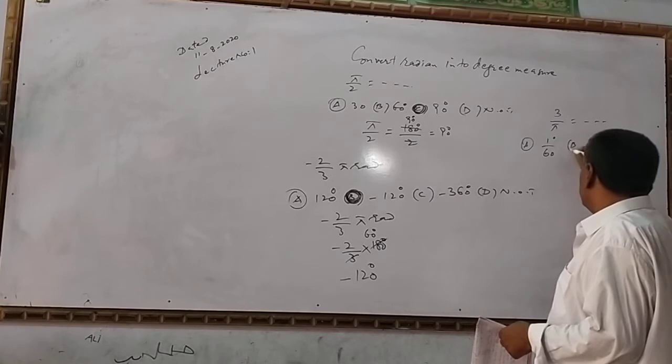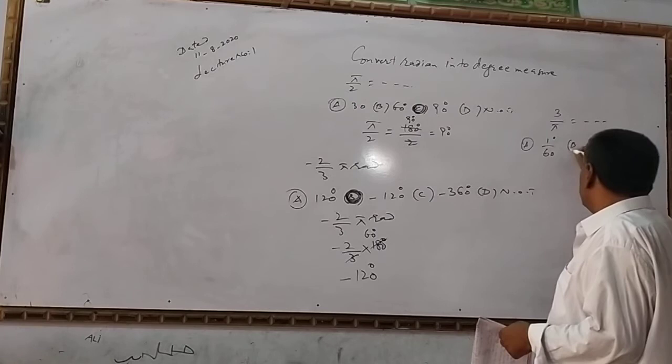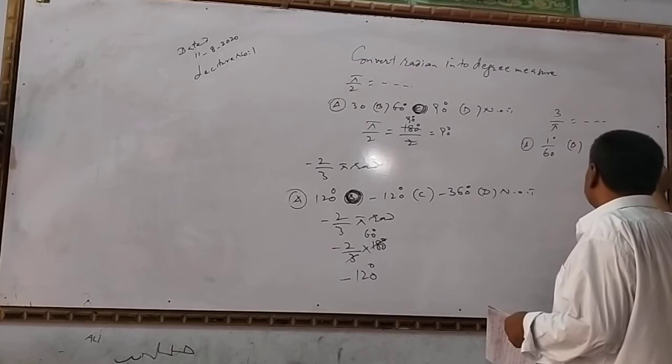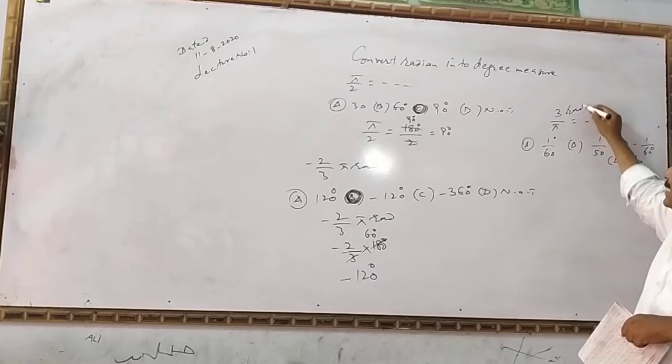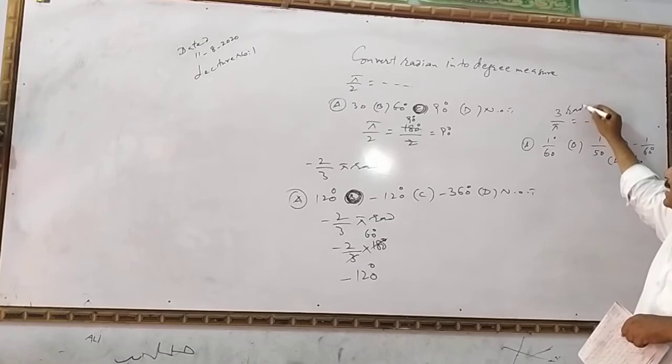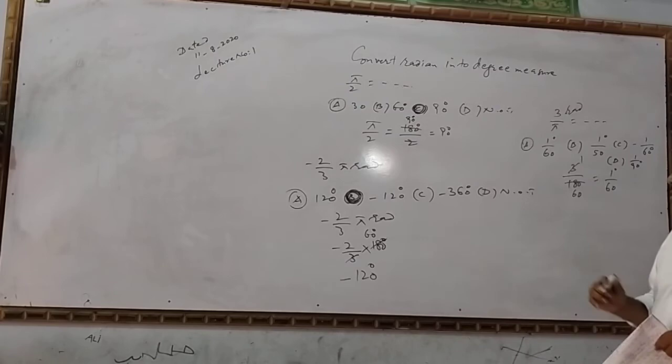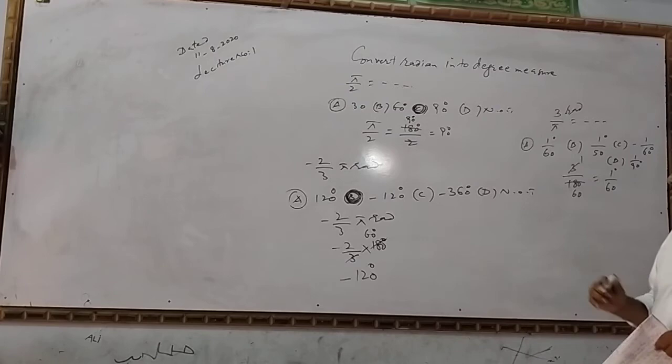For 1 upon 60 degrees. The options are: A) 1/60 degree, B) 1/50 degree, C) -1/60 degree, D) 1/90 degree. The answer is 1/60 degree, which equals π/180.